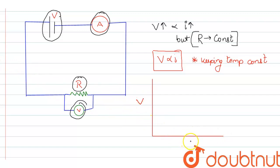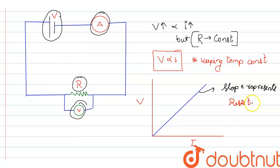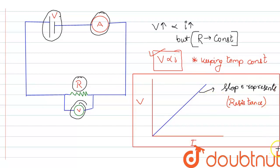Graphically, we plot V on one axis and current I on the other. Since V is directly proportional to I, we get a straight line. The slope of this V-I graph represents resistance. By this method we can verify Ohm's law, and the graphical representation confirms the linear relationship.